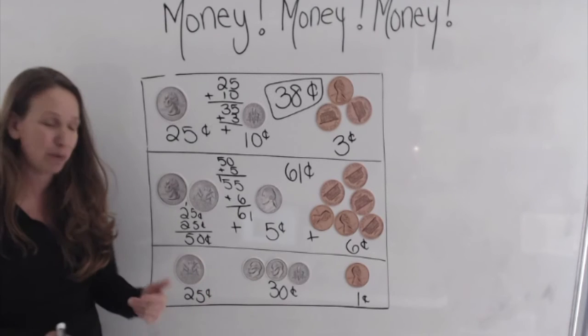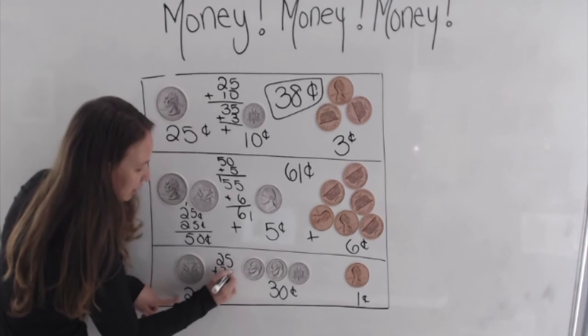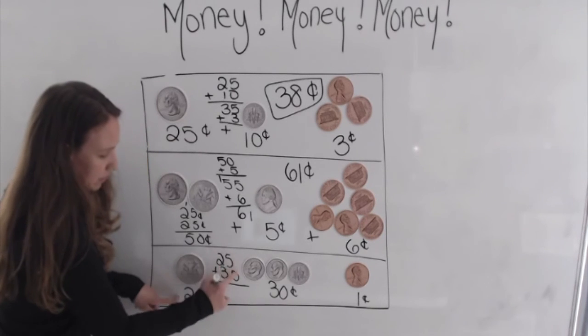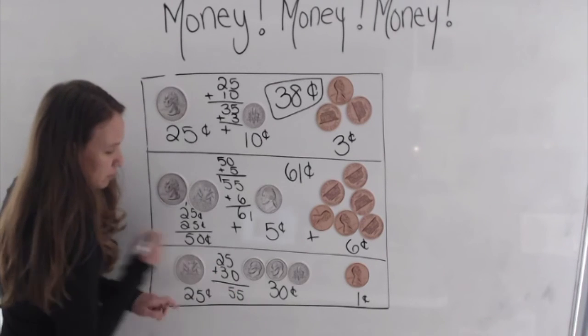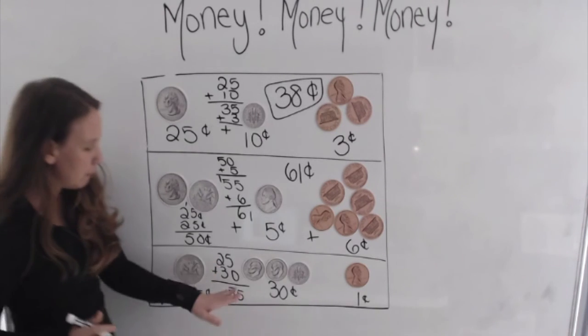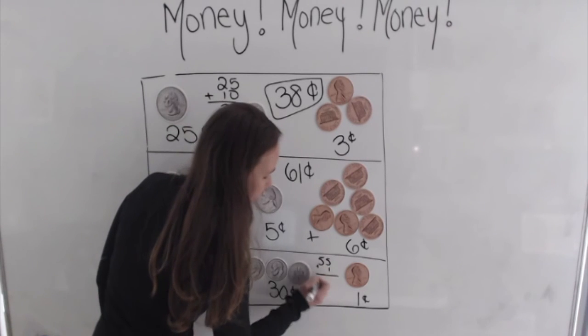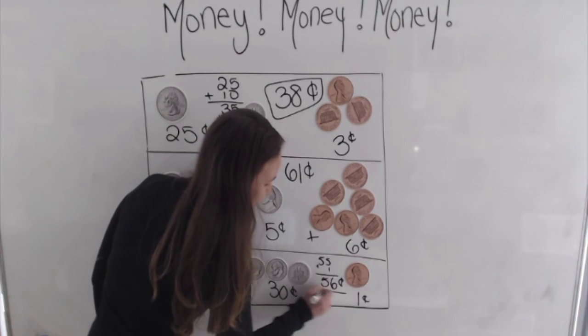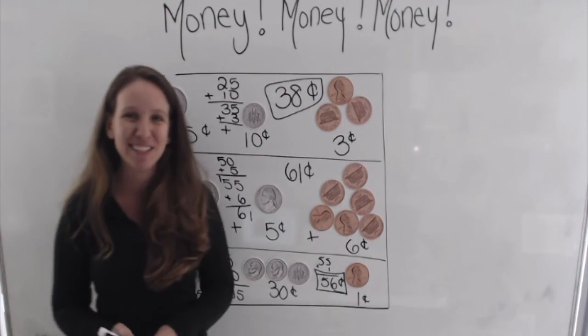So now when we're adding 25 and 30, 25 and 30 makes five plus zero is five. And two plus three is five. So we have 55 cents. 55 cents. And one more cent is 56 cents. And that's it. We have 56 cents in total.